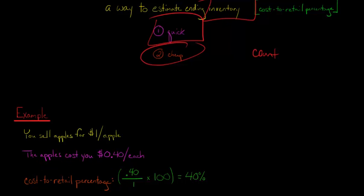And now we're going to calculate this thing called the Cost to Retail Percentage. And all we're going to do is we're going to take the cost per apple, which is $0.40, and we're going to divide it by the retail price, which is $1 an apple. So we're going to take 0.4 and we're going to divide it by 1, and then to convert it to a percentage, we're just going to multiply by 100. So 0.4 divided by 1 is 0.4, and then we multiply that by 100, and that's going to give us 40%. So 40% is our Cost to Retail Percentage.